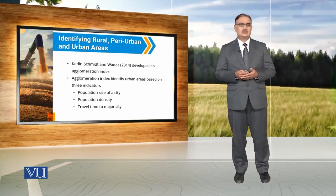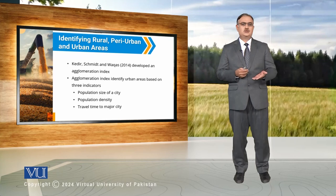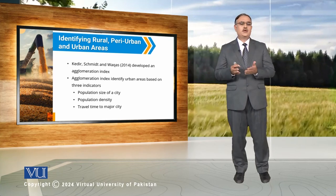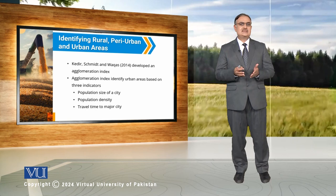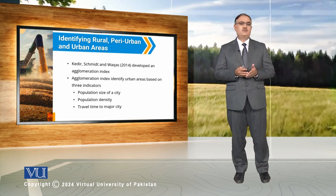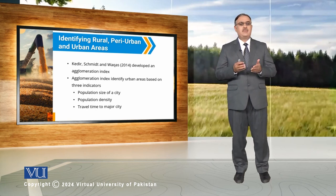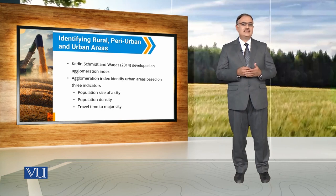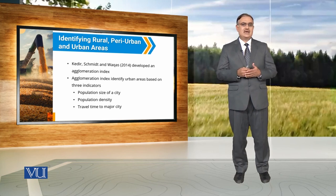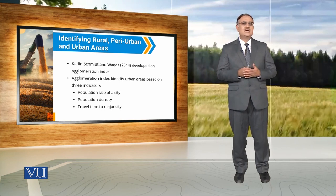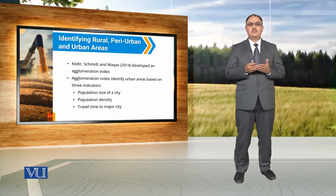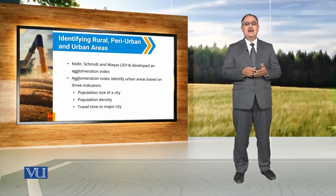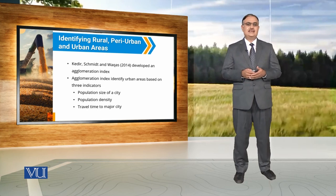For example, according to Qadir, Chamit, and Vakas, they developed an agglomeration index to categorize areas under the subheading of rural, peri-urban, and urban areas. For this categorization, they basically use three indicators: population size of a city, population density, and travel time to a major city.